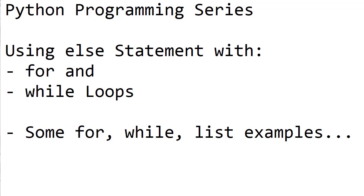So far in the previous episode, especially in the decision-making episode, we saw the use of else. If you have any expression with the while and you are testing a certain expression, and if that expression is either not true or false, depending on that, we had seen the use of the else. On similar lines, loops also support the use of the else statement. The else statement has a different way of working when used with the for loop versus the while loop.